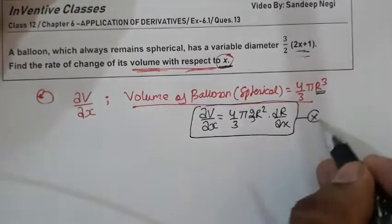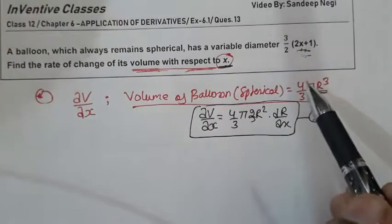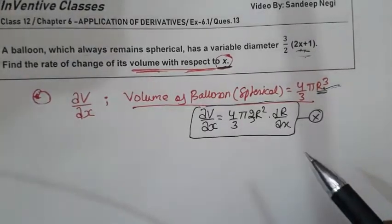But this time this approach will be wrong. The reason is very simple: because when you have already diameter x, so it is better that we put it here and then easily differentiate it.